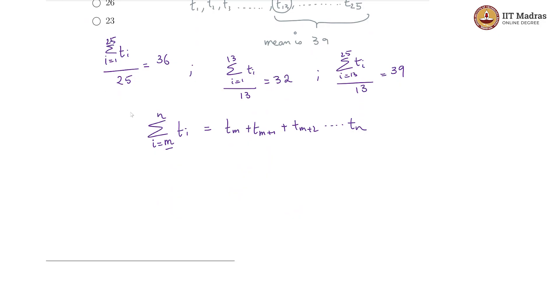So in this particular first case, what we are basically saying is t1 plus t2 plus t3, so on till t25, that is what it means, where i goes from 1 to 25. The whole by 25 is equal to 36. And this gives us sigma i goes from 1 to 25 t i is basically 25 times 36, which is equal to 900.